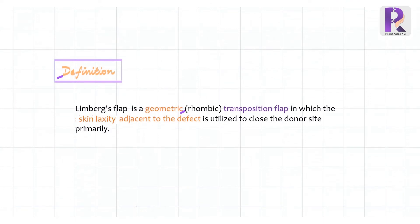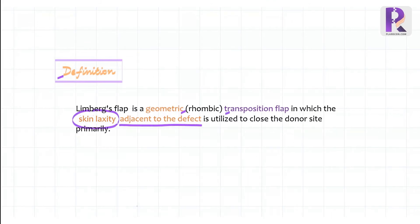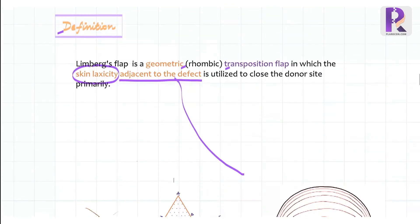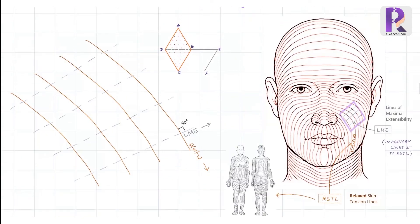The Limburg flap is a geometric rhombic transposition flap in which the skin laxity adjacent to the defect is utilized to close the donor site primarily. To figure out which part of the skin is lax, scientifically we need to know two lines. The first one is RSTL, which stands for Relaxed Skin Tension Lines. It was first described by Borges. He obtained the lines throughout the body by pinching the skin in the living and noting the direction of the ridges and furrows.